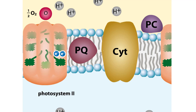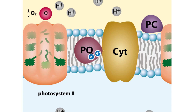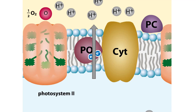Meanwhile, the electrons continue along the electron transport chain. As these excited electrons reduce plastoquinone, energy is released and used to move hydrogen ions across the membrane into the thylakoid interior. As hydrogen ions build up inside, they become a source of energy that is later used to make ATP.